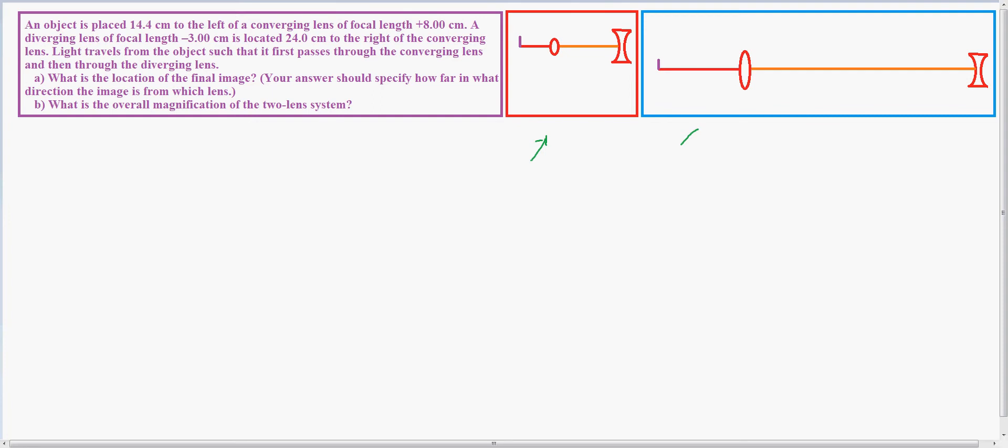So the equation I used, I'm going to do part A first, is 1 divided by Q equals 1 over the focal point minus 1 over the distance of the object. This is distance of the image, distance of the object. Since we're doing the first lens here, which is why I go as first.